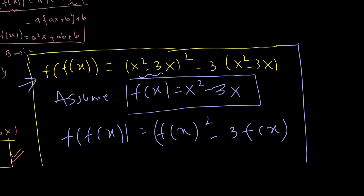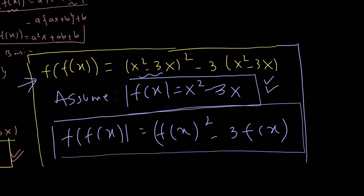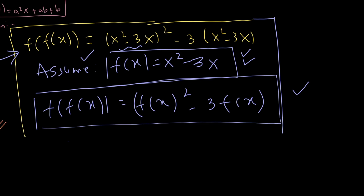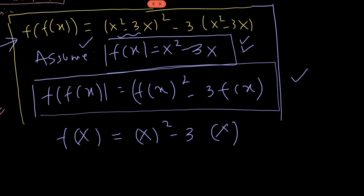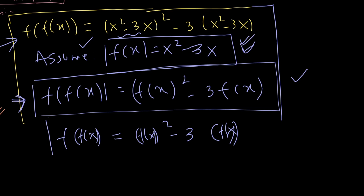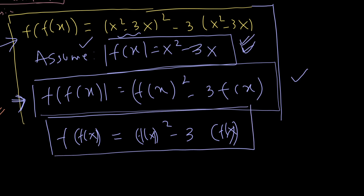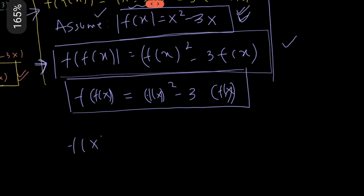Because of this assumption, the equation we got shows no contradiction. The pattern for the function f we assumed was: f of something equals something squared minus 3 times something. We assumed f of x equals x² - 3x, and we got f of f of x equals f of x squared minus 3 times f of x — which perfectly fits that pattern. Hence there is no contradiction, meaning our assumption is correct. So the value of f of x is x² - 3x, and this is the answer we were looking for.